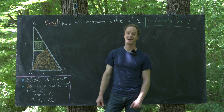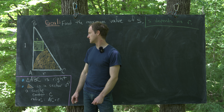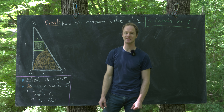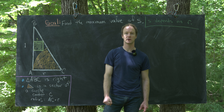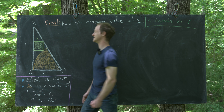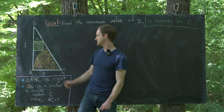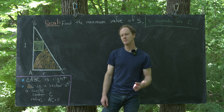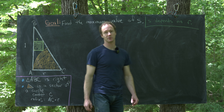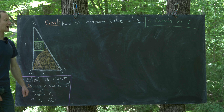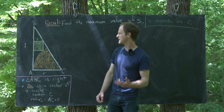Next, we inscribe a square above the sector of the circle so that one side of the square is contained in line segment AB. That side has side length s, which depends on r. Notice: if r tends to zero, s tends to zero; and as r tends to infinity, s also tends to zero. That tells us there's probably some value of r that makes s as large as possible — and that's our goal: find the maximum value of s.